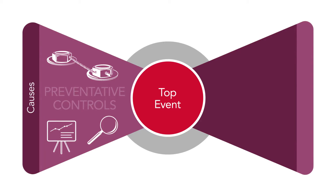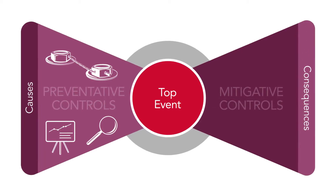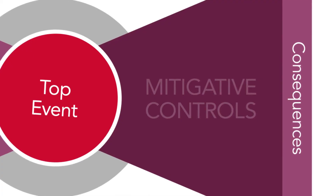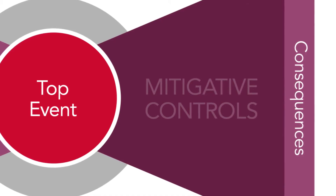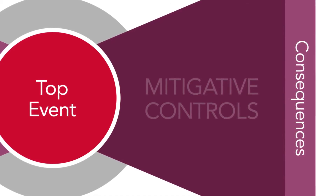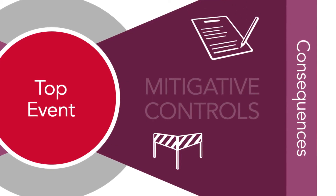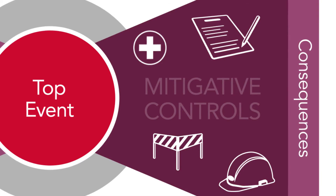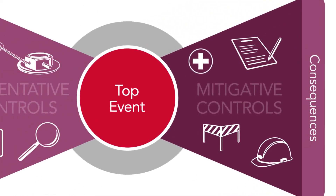The right side is where we try and mitigate the impact of the dropped object. By this stage we've already had a dropped object, and we're now mitigating or reducing the impact. Examples of mitigative controls might be drop zones, reporting to prevent future drops, PPE, or even first aid to treat an injured colleague after they're struck by a dropped object.